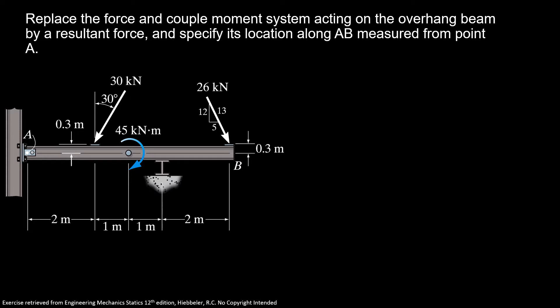So here first we're gonna find the resultant force in X. The sum of force in X, I have here pointing to the right one force and here pointing to the left another force. So the first force is 26 times 5 over 13 minus 30 times sine of 30 degrees.